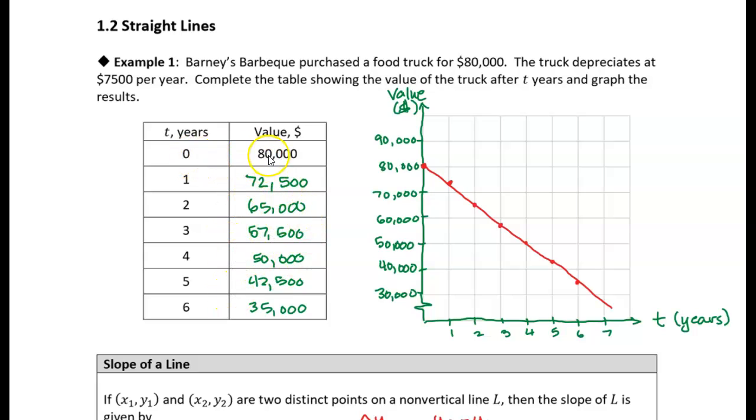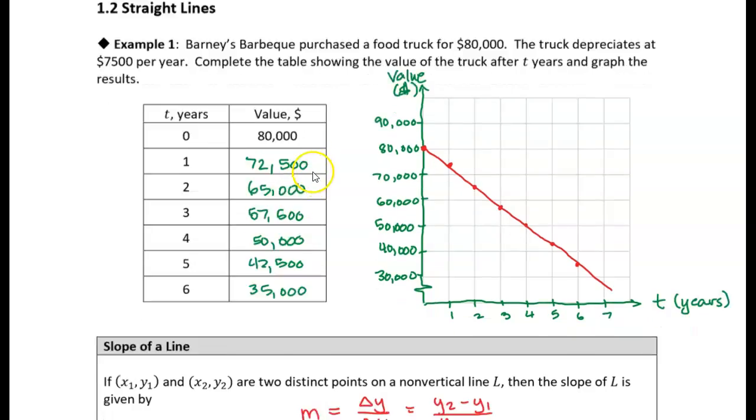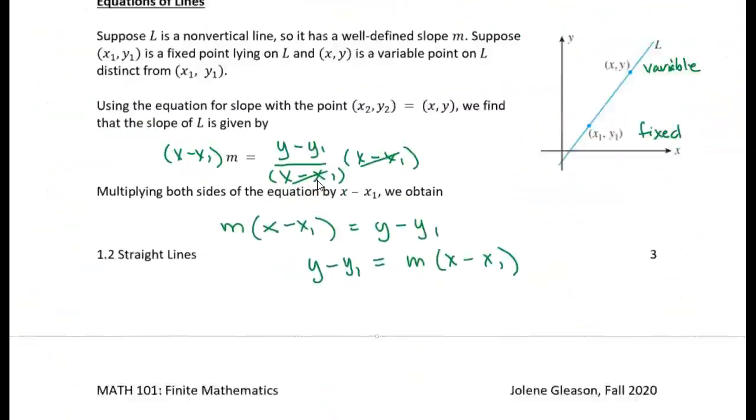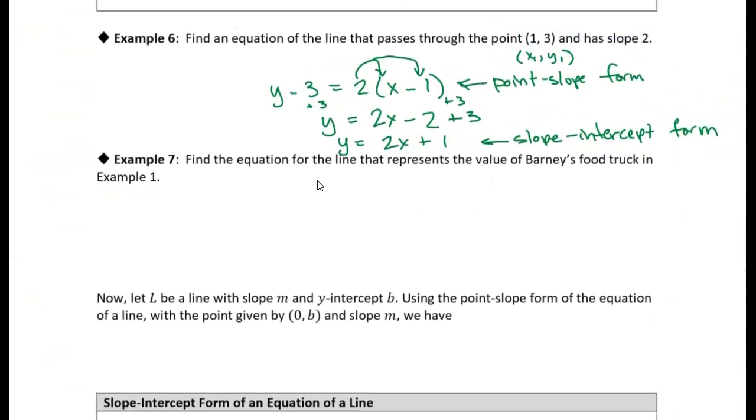Now, I like this first point, zero comma 80,000, so let's choose that point. All right, so let's go back down to the example here.